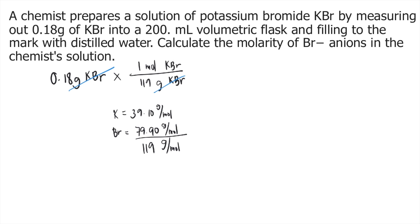As you can see in the problem, the question asks for the molarity of the Br⁻ anions. If you recall, KBr, once dissolved in water, dissociates into two ions: the potassium cation, K⁺, and the bromide anion, Br⁻. From the dissociation, one mole of KBr dissociates into one mole of K⁺ and one mole of Br⁻.